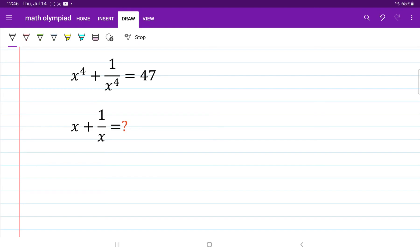we'll be looking to find the sum of x plus 1 over x when we are given x to the power 4 plus 1 over x to the power 4 equals 47.